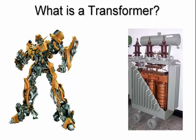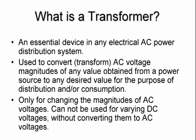So what is a transformer? A transformer is not what we see in the movies, although it might look a lot more impressive. A transformer is what you see on the right hand side, and although not that impressive, it is very valuable to us. Because it's a very essential device in a distribution system. What it can do is convert — or what the name comes from — transform AC voltage magnitudes of any value from a power source to a desired value for distribution or consumption. It's only for changing the magnitudes of AC voltage; we cannot use it for varying DC voltages.